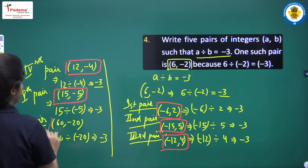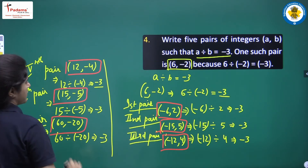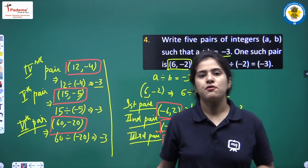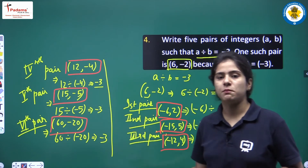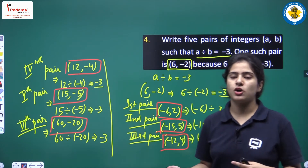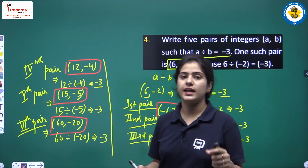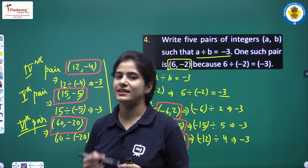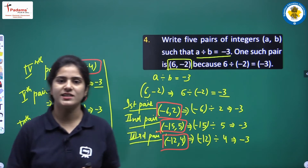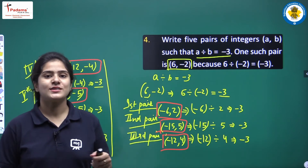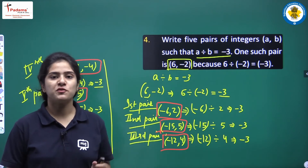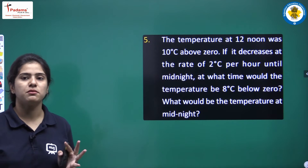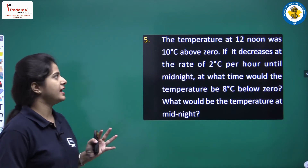From all these pairs you can verify the operation a divided by b equals minus 3. Let's move to the next question, Question 5.